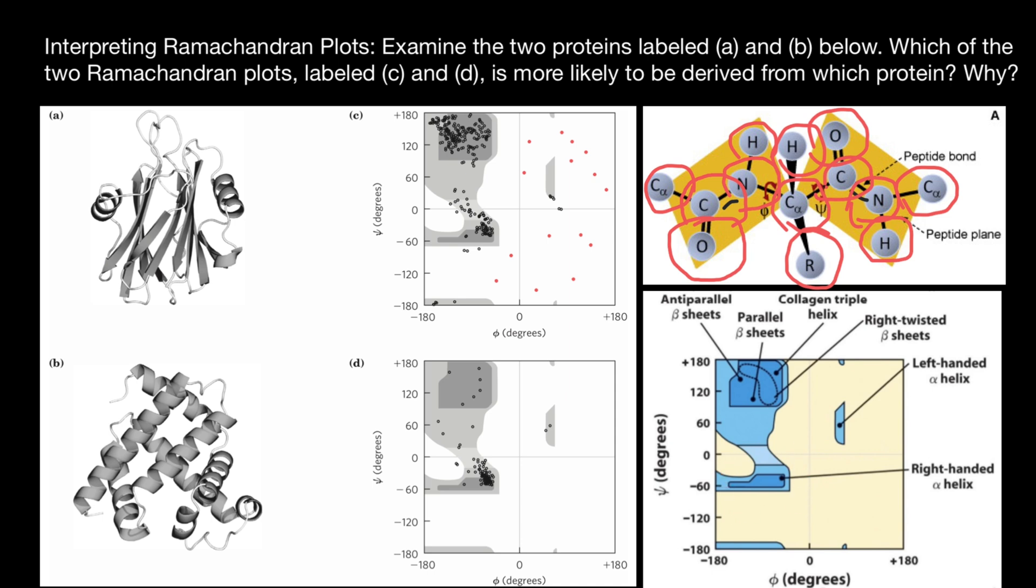Right-handed alpha helix, which is like over 90% of all helices, and beta-pleated sheets, which are concentrated here. And left-handed alpha helices with all numbers, all possible angles, we can find in this area.